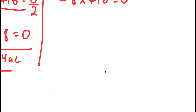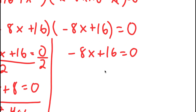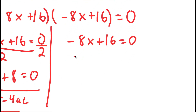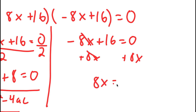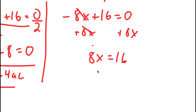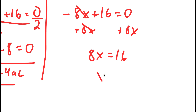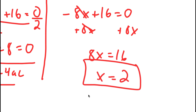For my second equation, I have negative 8x plus 16 equals 0. Adding 8x to both sides, I get 8x equals 16, meaning x equals 2. So I have 3 solutions to this equation.